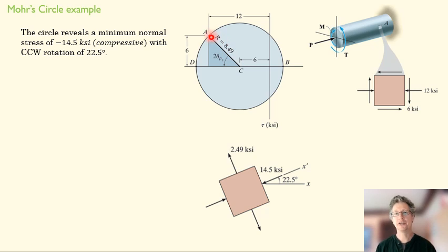Maximum in-plane shear stress is 8.49 ksi. If I rotate that here, I'm adding this line to this line. So it's this guy plus that guy. Negative 8.49 plus negative 6 gives me a minimum stress of negative 14.5.